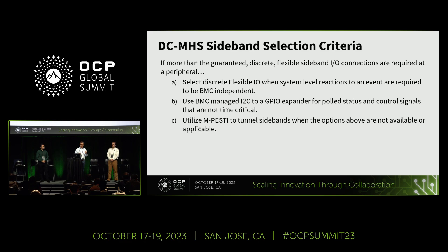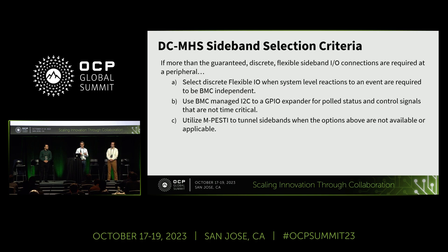The next tier is the tunneling interface — no additional signals, with a light protocol overhead and no BMC dependence, but there is an implementation tax on the peripheral. The third tier for tunneling is just using the existing I2C sideband to a virtual or physical GPIO expander for basic control and status queries.